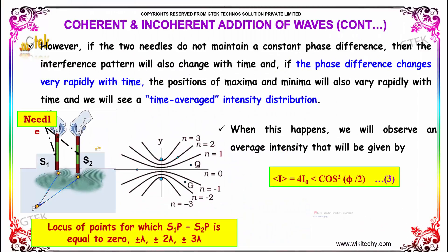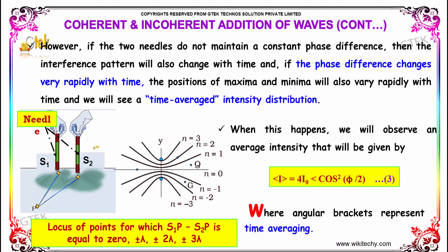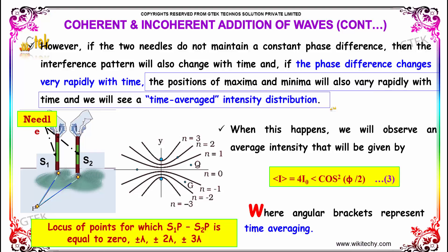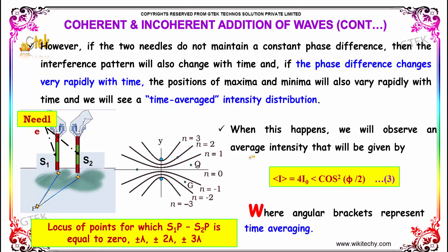However, if the two needles do not maintain a constant phase difference, then the interference pattern will also change with time. If the phase difference changes very rapidly with time, then the positions of maxima and minima will also vary rapidly with time. We will observe an average intensity given by I = 4I₀⟨cos²(φ/2)⟩, where the angular brackets represent time averaging.